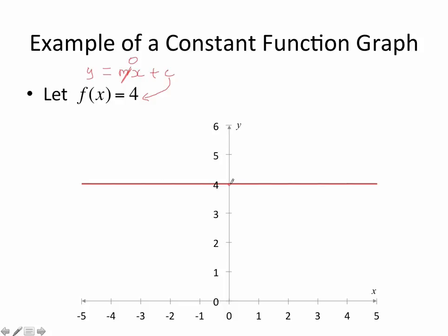So, as you can see, a constant function is just a straight line that passes through the point 4 on the y-axis.